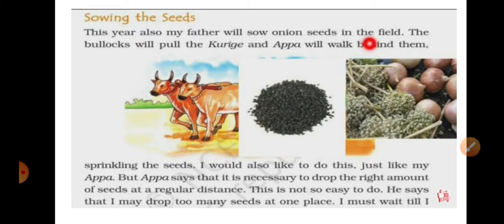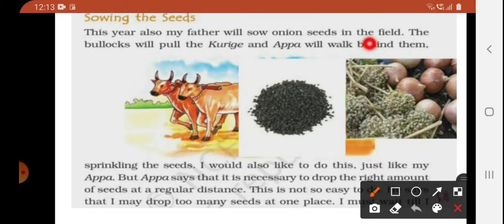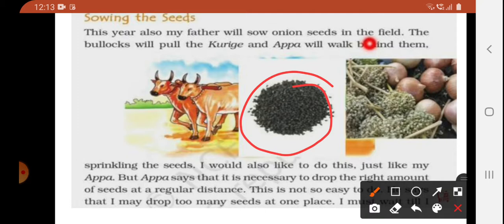This year, his father decided to sow onion seeds again. You can see these are the onion seeds — they are black in color. These seeds are also consumed raw; it is said that if you have a pinch of these seeds in the morning before breakfast, your skin and hair will be beautiful. So this farmer is going to sow these onion seeds.